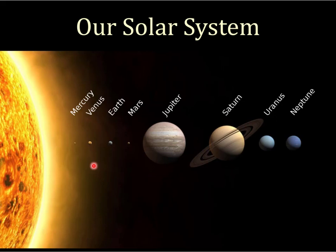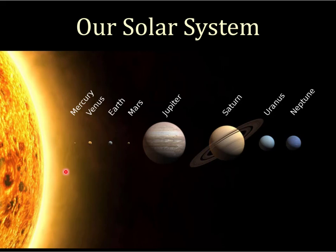This brings up an interesting question: is our solar system typical? Rocky planets near the center, gassy planets on the outside, with no overlap — no rocky planet between Jupiter and Saturn, no gassy planet between Venus and Earth. I understand why a gassy planet can't be close to the Sun — the Sun would blast the gas right off. But I don't understand why there couldn't be a rocky planet further out. We only have one solar system to look at.